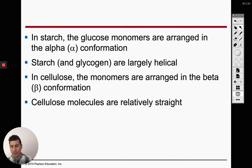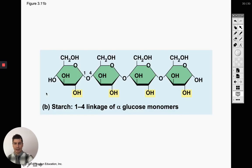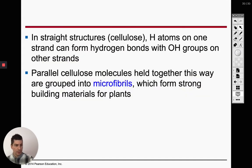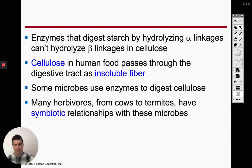This is just a summary: starch has alpha glucose and cellulose has beta glucose. In cellulose, those strands coming out of the glucose are called microfibrils — they're just long strings. That's all you need to know for that.